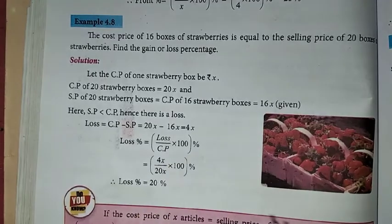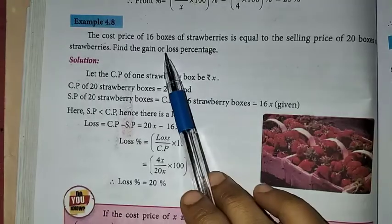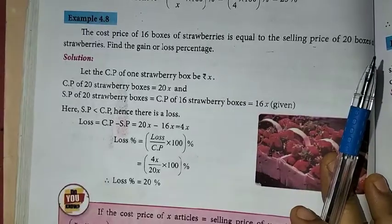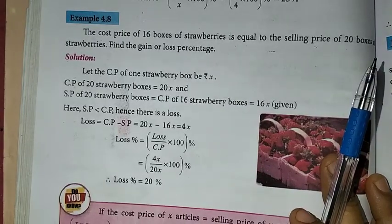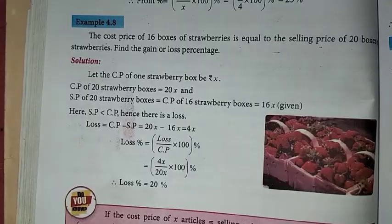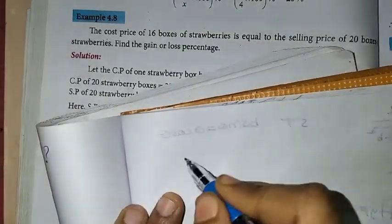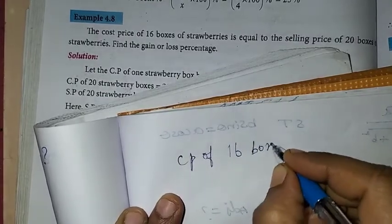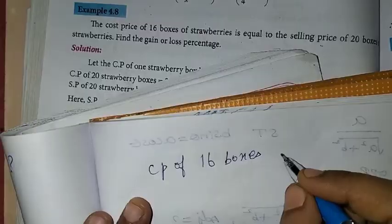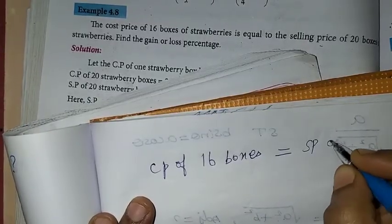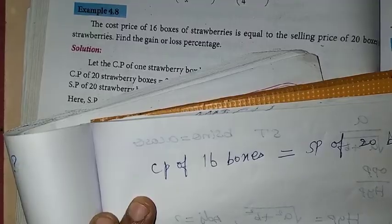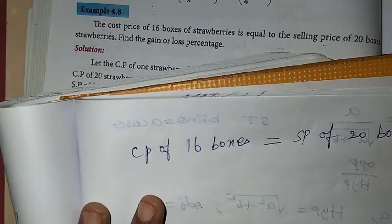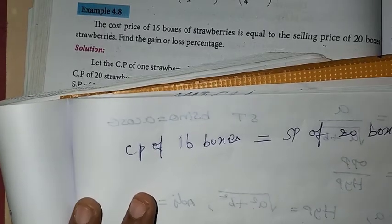In the problem, the cost price of 16 boxes of strawberries is equal to the selling price of 20 boxes of strawberries. Find the gain or loss percentage.